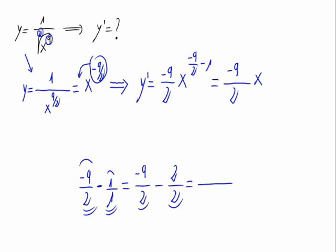Now we have common denominator 2: minus 9 minus 2 equals minus 11. So x would be raised to the power of minus 11 halves.